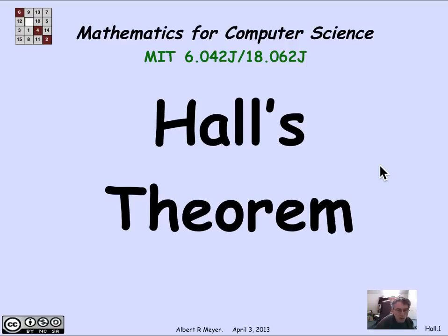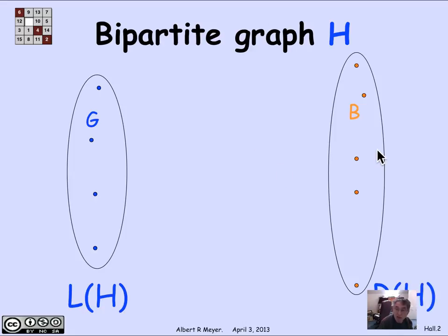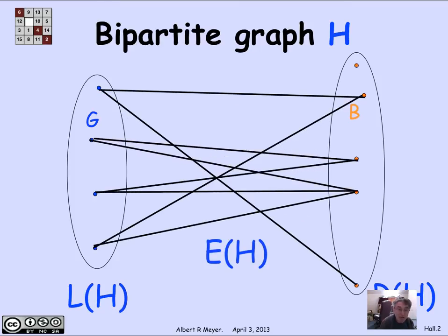Let's restate Hall's theorem in a way that doesn't mention boys and girls, but let's remember the girl-boy setup to start. The general setup is a bipartite graph H. A bipartite graph has two sets of vertices: the left vertices L of H and the right vertices R of H. The vertices of H altogether are L of H union R of H. Both are non-empty and they don't overlap. The edges of H only go between L of H and R of H. That is the definition of a bipartite graph.